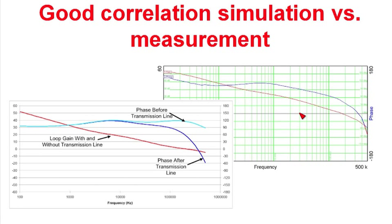Here's a comparison of simulated values to actual measurements on the power supply. The loop gain is in very good agreement between the simulations and the measurements. If you look at the phase you'll see that there's pretty good correlation between the phase where we used the transmission line in the simulation and the phase where we actually did the measurements.